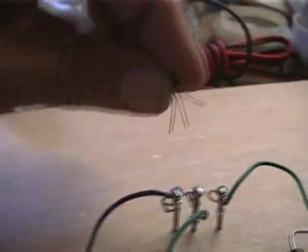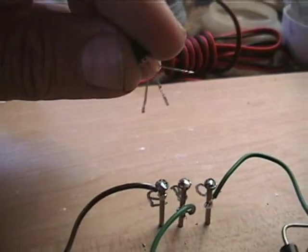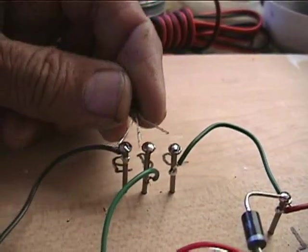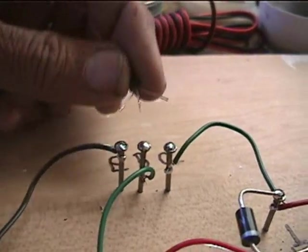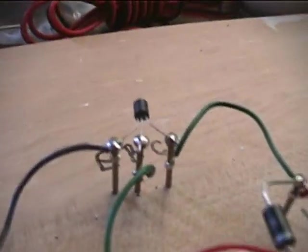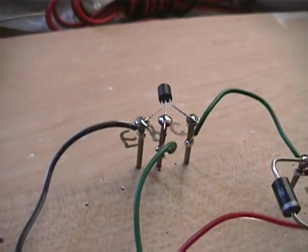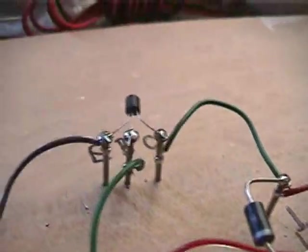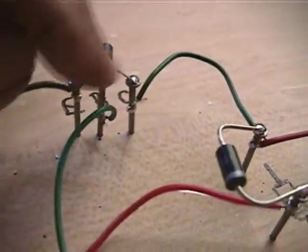The next thing I am going to do is to place my transistor emitter base collector right here. So, I am going to solder it. As you can see, I already soldered the transistor emitter base collector to the three nails.